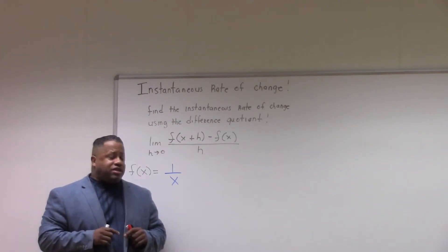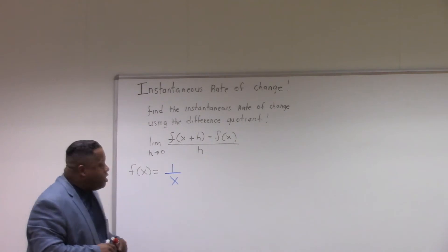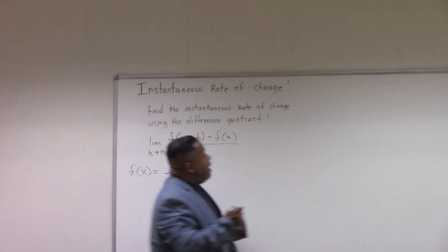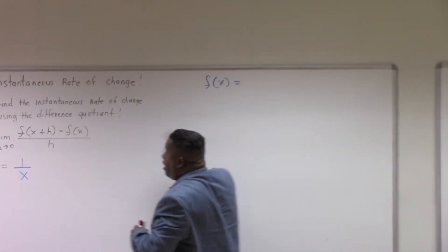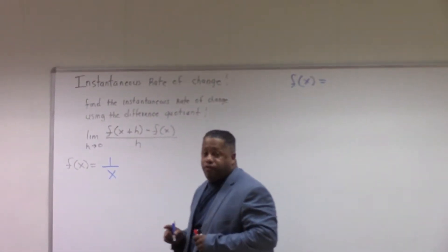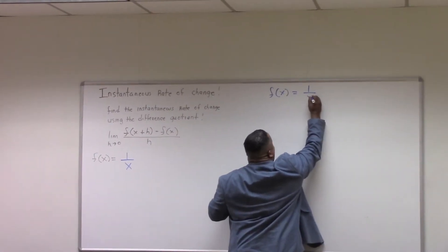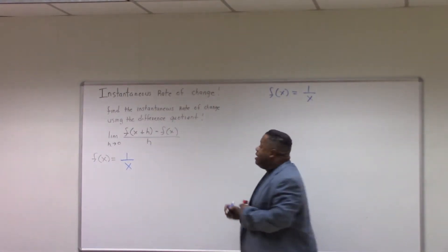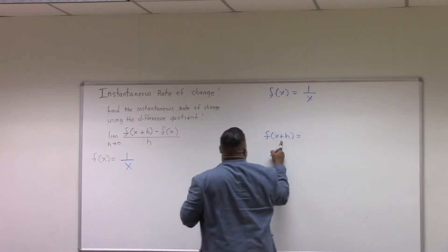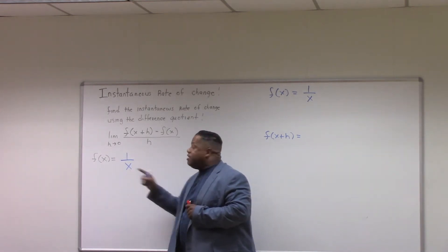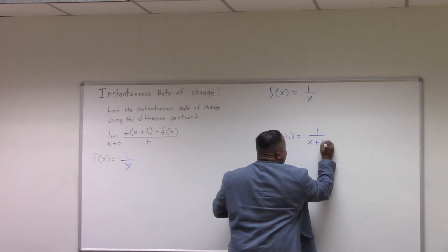We want everybody all over the world to see how the five steps of the difference quotient are going to be applied. So our first step is f of x. What is f of x? We're taking x and substituting it in for x in the function, so we get 1 over x. Our second step is f of x plus h — we substitute x plus h in for x, giving us 1 over x plus h.